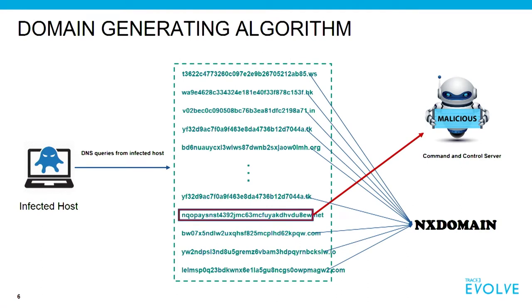We're going to talk about domain generating algorithms — DGAs. These are techniques used by malware to avoid blacklisting. The infected host creates all these randomized queries to DNS, but only a few of them actually call out to the command and control server — most return an NXDOMAIN. The malware constantly creates new randomized domains, and on the attacker's side, they register a couple of these quickly and take them offline within 24 hours, making them very hard to block. That's where machine learning comes in — we break down these queries, do some feature engineering, and train models based on test data sets.